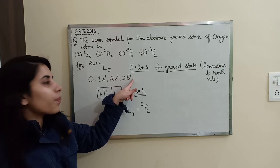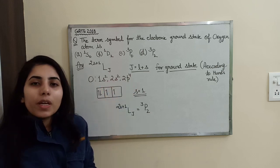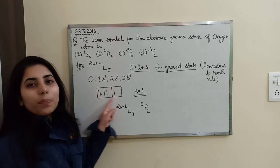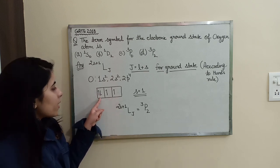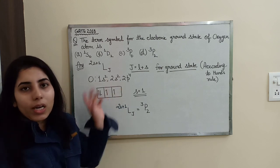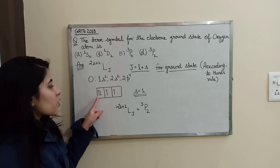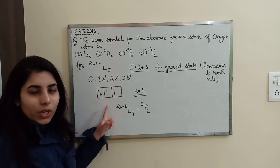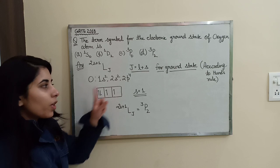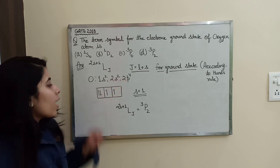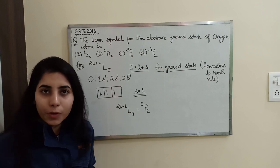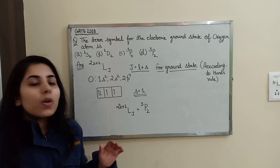When you make the configuration for the p orbital, you will have this kind of structure. You need to fill 4 electrons into it. Initially you fill one electron in each place — 1, 1, 1 — and after that you fill the fourth one here. You can see that in this case you are having a more-than-half-filled orbital.